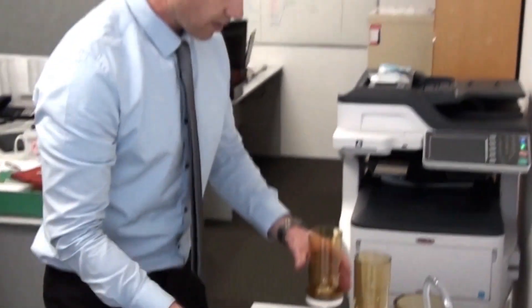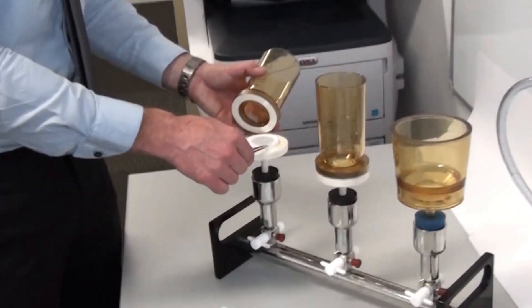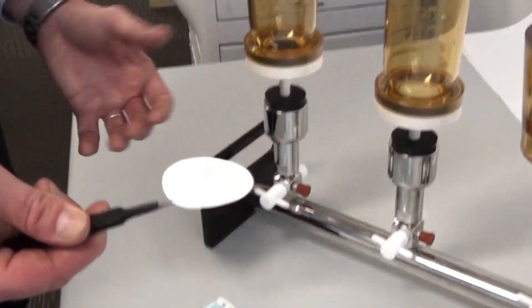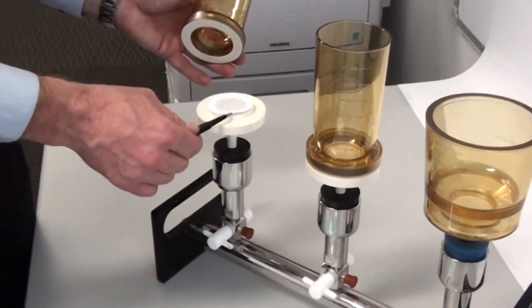And in your typical setup in a micro lab, you'd filter your sample through, you'd grab your 47 mil membrane, and you'd pop that on an agar plate for incubation. Looking for bacteria.